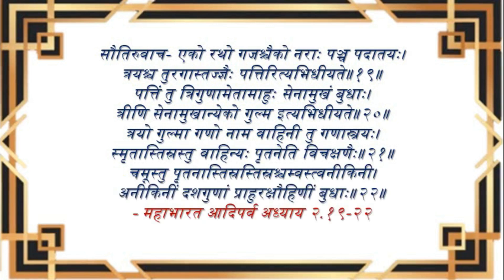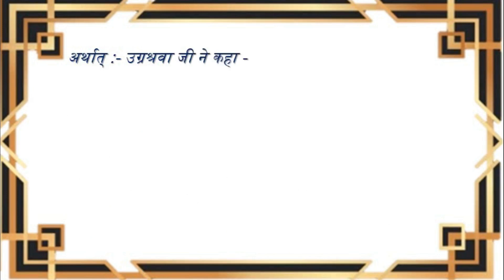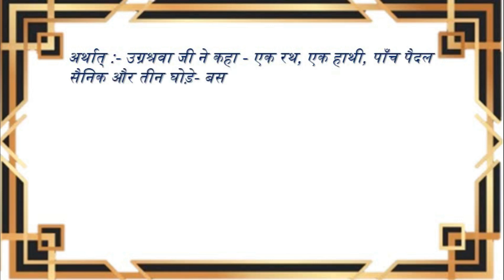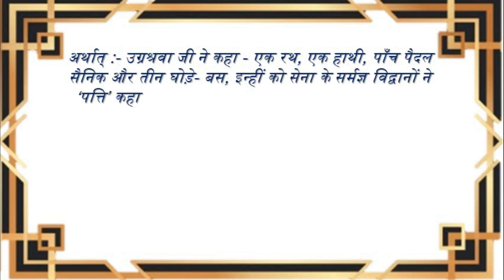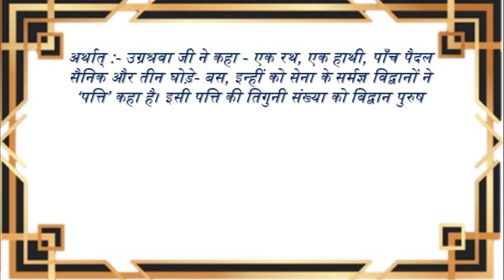यदि घोड़े की बात करें तो एक घोड़े पर एक सवार बैठा था। ऐसे ही हाथी पर कम से कम दो व्यक्तियों का होना आवश्यक है — एक तो पीलवान, हाथी हाँकने वाला, और दूसरा लड़ने वाला योद्धा। इसी प्रकार एक रथ में दो मनुष्य और कम से कम तीन-चार घोड़े रहे होंगे। यह सब मिलकर एक चतुरंगिणी सेना कहलाती है।